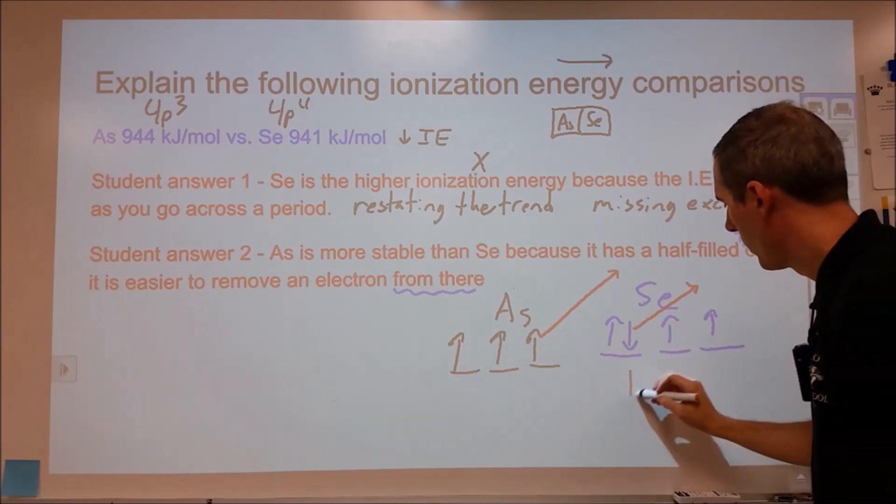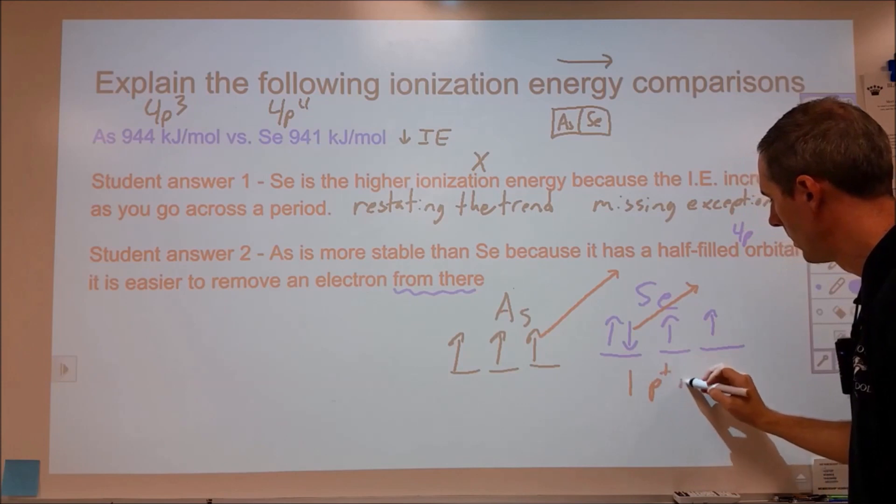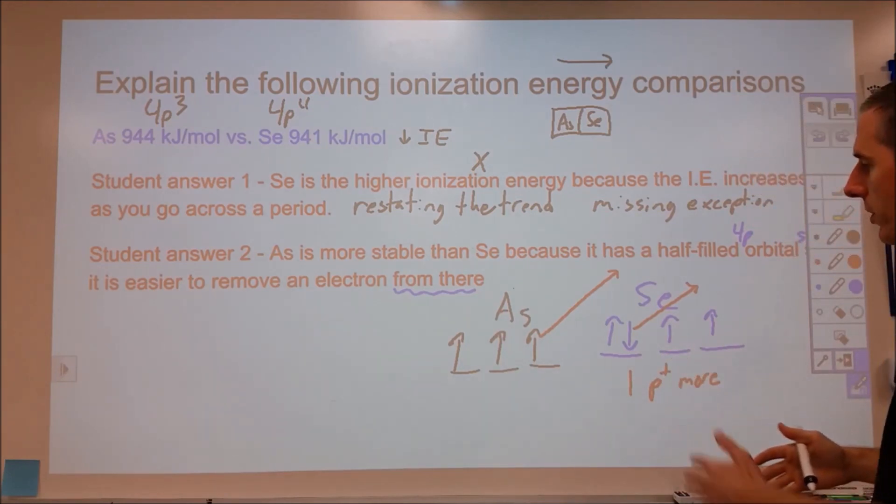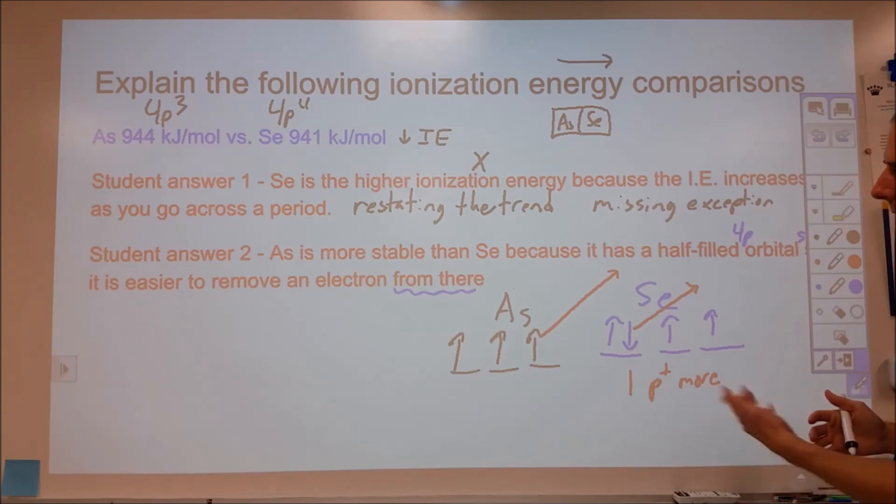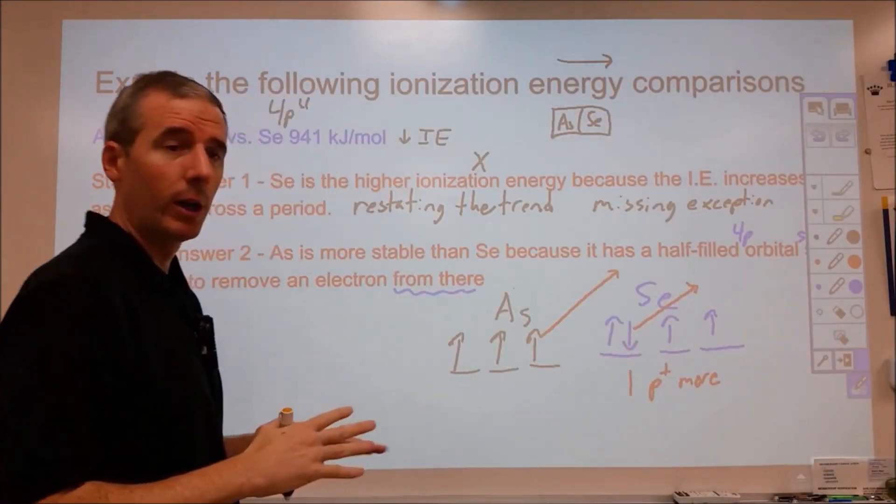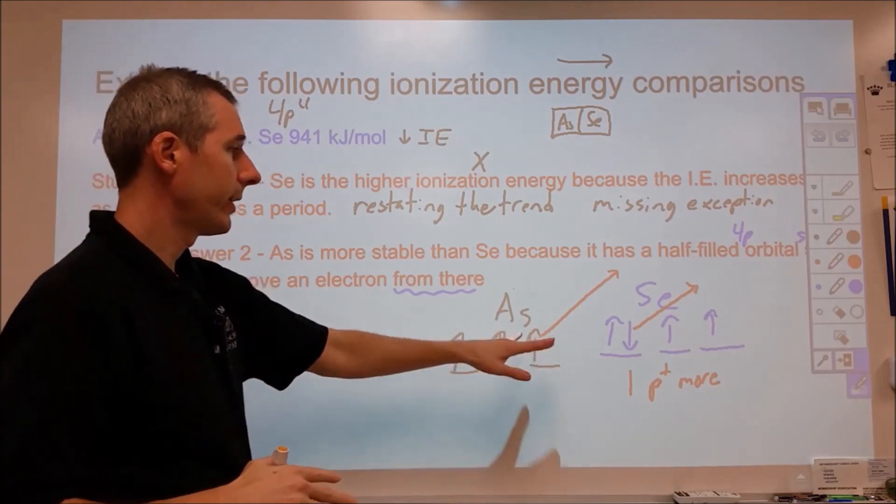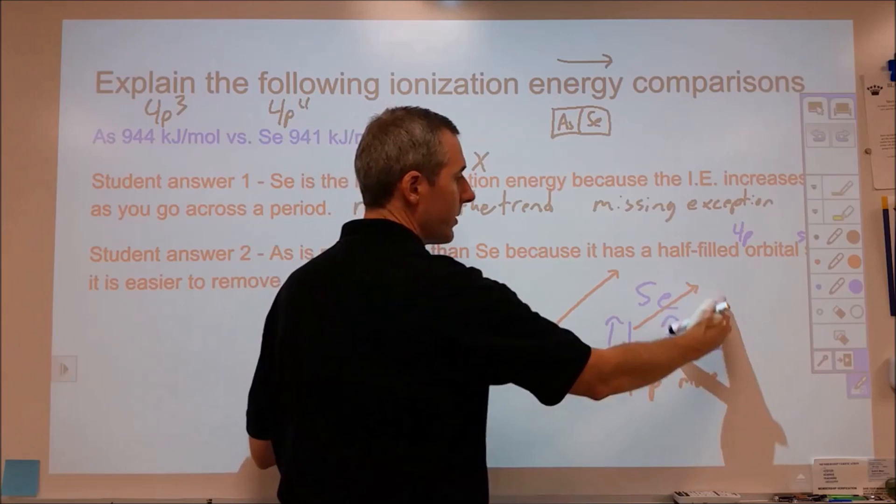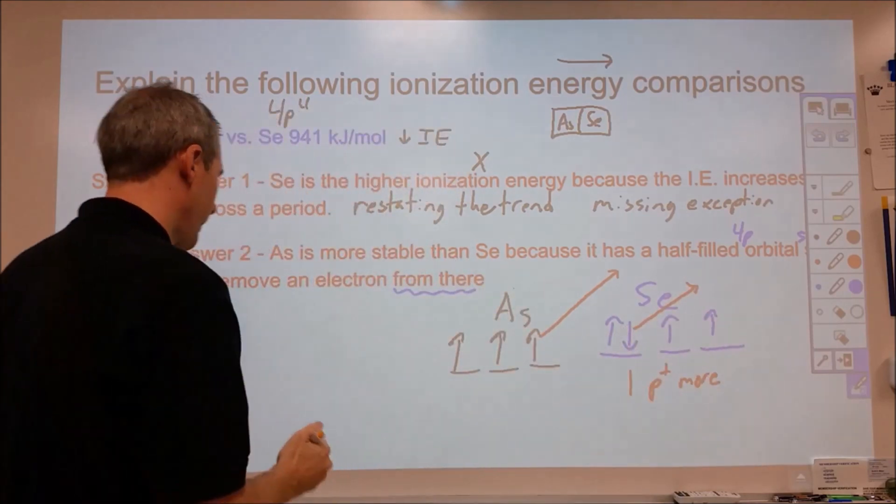The curiosity is this has one additional proton, and we're adding to the same energy levels, so we shouldn't see an increase in shielding. So something's going on that's causing this to be an exception. Now, there are two good ways to answer this, but one is you should definitely start by including the orbital diagram picture of just the final valence electrons, if nothing else, to give an idea of something to kind of point to and say, this is what I'm talking about here.